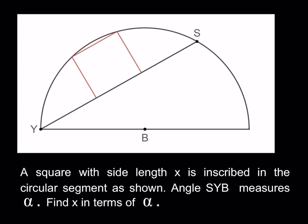So we do have a square with side length x which is inscribed in the circular segment as shown. So it's as if it's on an inclined plane sort of. And angle SYB measures alpha. Find x in terms of alpha. So what we're going to do is basically find the side length for the square in terms of the angle alpha.